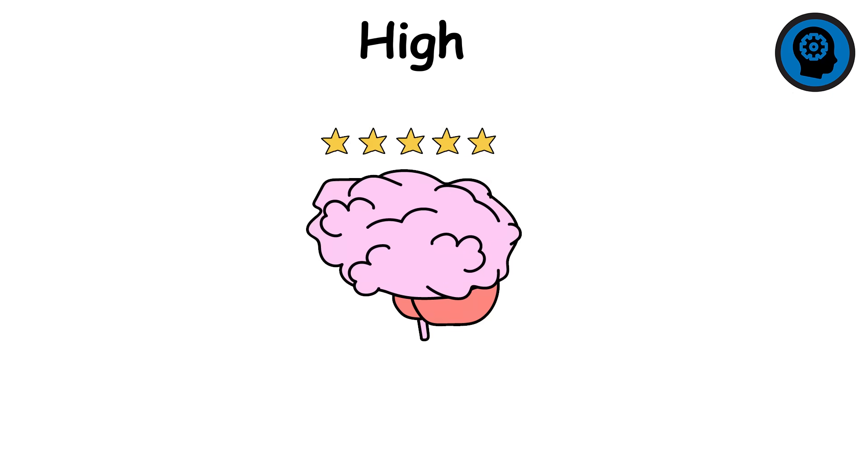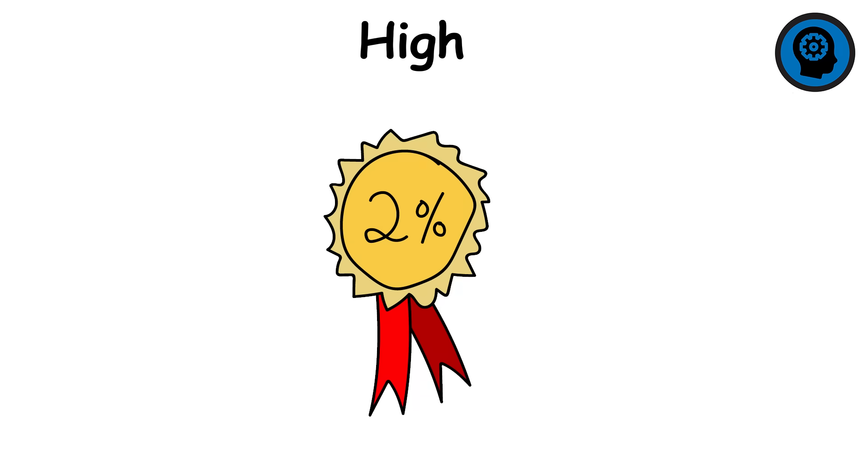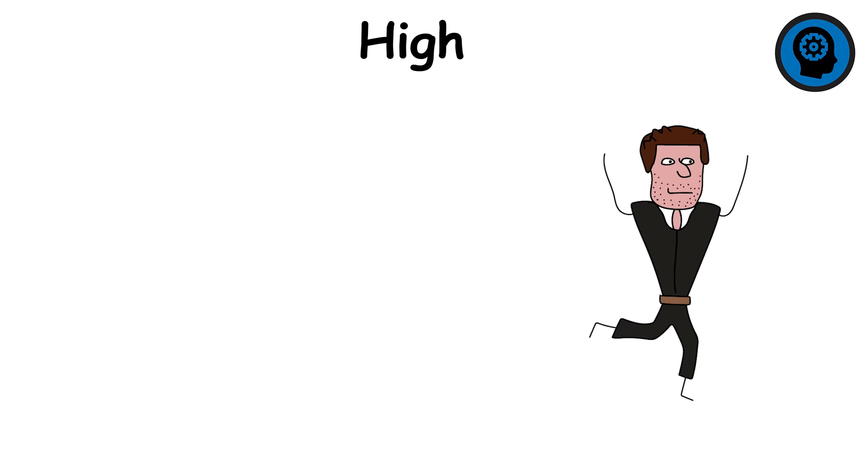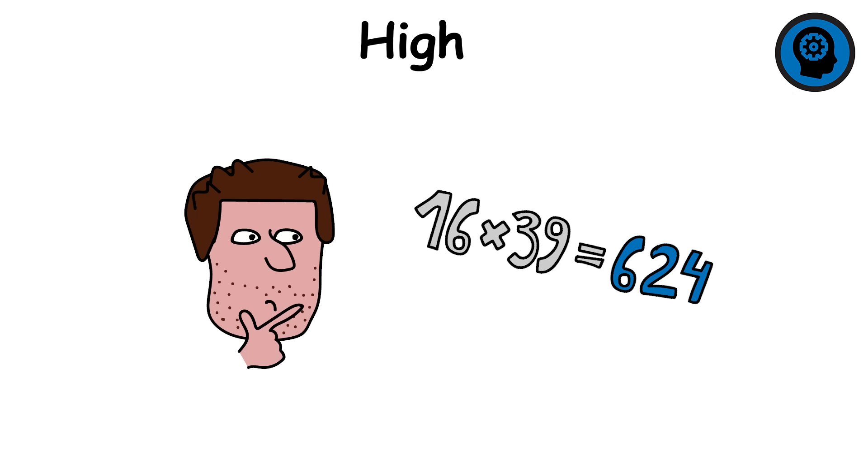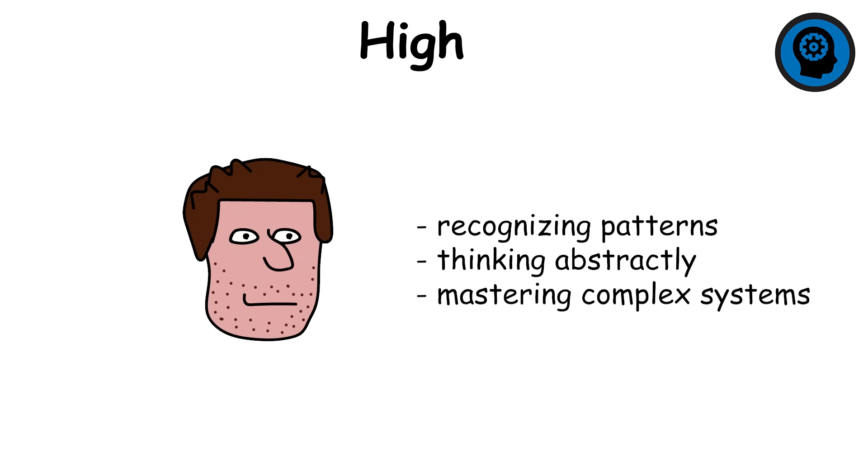High intelligence typically refers to IQs between 130 and 145, about the top 2% of the population. People at this level don't just learn quickly. They often make intuitive leaps, seeing solutions before others even identify the problem. They excel at recognizing patterns, thinking abstractly, and mastering complex systems.